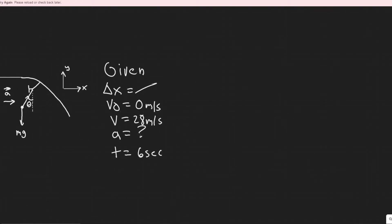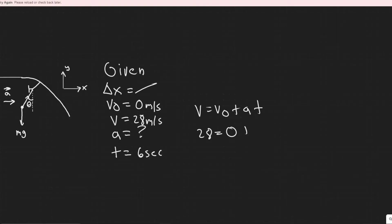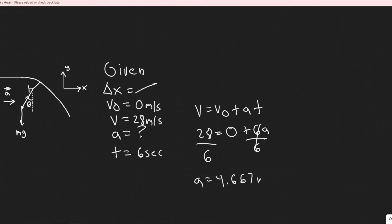I'll use the kinematic equation v = v₀ + at, because we have v, v₀, and t. Plugging in: 28 = 0 + 6a. Dividing by six gives a = 4.667 meters per second squared. So now we have the acceleration.